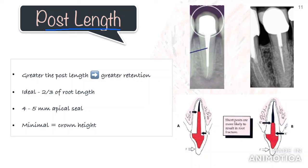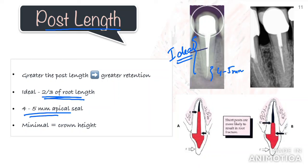Now we will discuss each of these factors in detail. The first factor is post length. Although placement of the post at two-thirds of the root length is considered ideal, it is essential to maintain at least 4 to 5 mm of apical seal, because anything less than that will disrupt the seal, compromising the entire restoration. At bare minimum, the post should extend at least a distance equal to the height of the crown being placed.